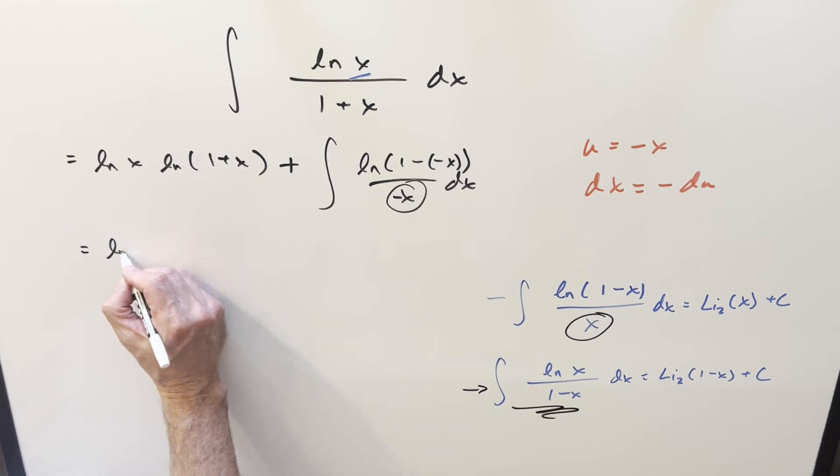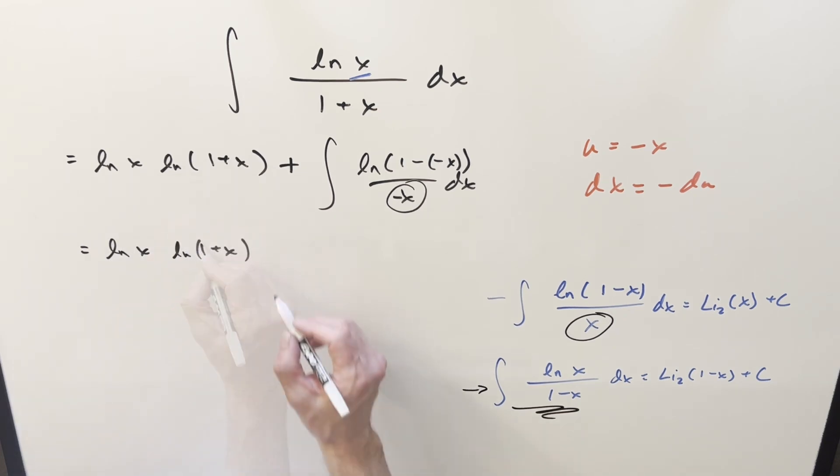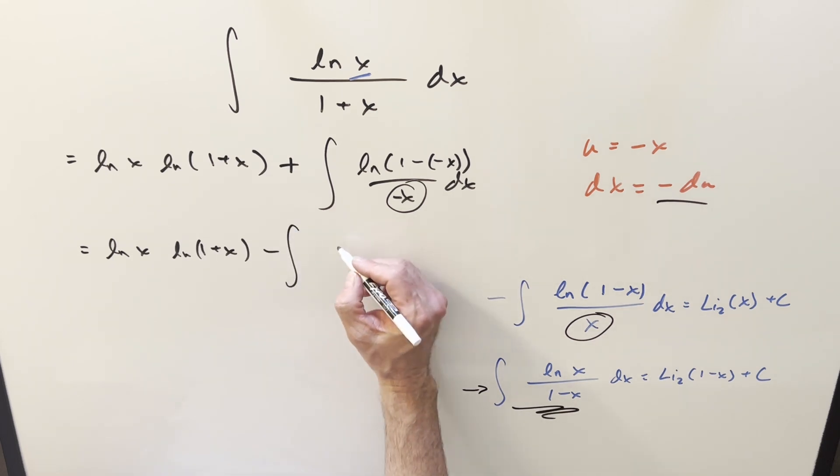What's going to happen? We'll bring this stuff along for free. Then on our integral, we're going to have a minus du, so let's bring the minus over here, and then we'll transform this to ln one minus u over, this is now a u, and then du.